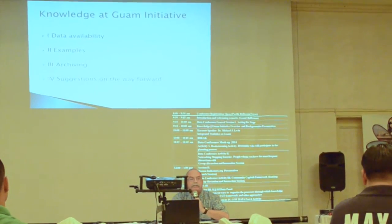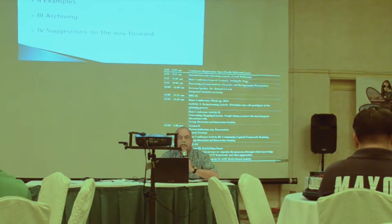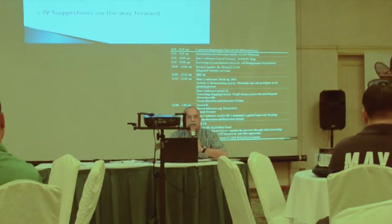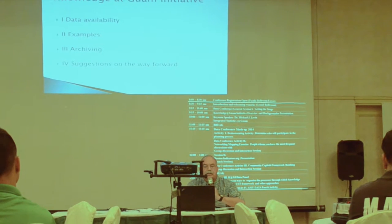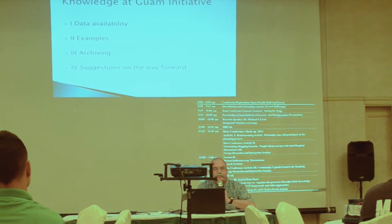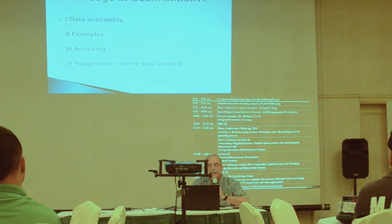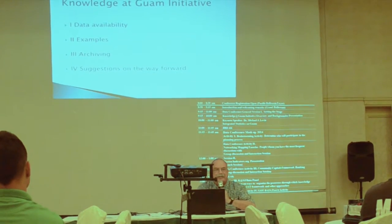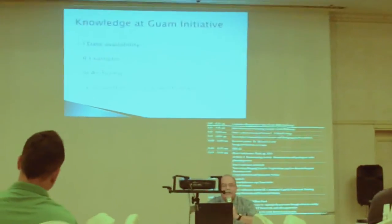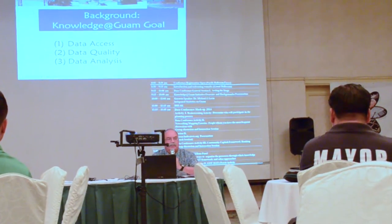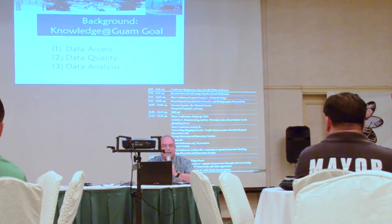There are four general areas I'll cover: first, data availability; then some examples; then the importance of archiving; and finally suggestions on the way forward, which will be fairly controversial. I'm speaking only for myself, not for the University of Guam or the Knowledge of Guam project. The three goals of Knowledge of Guam are access, quality, and analysis.